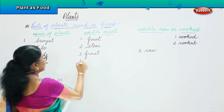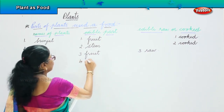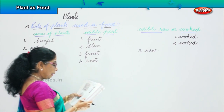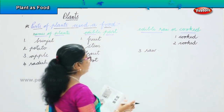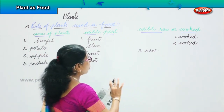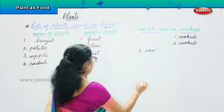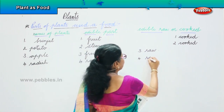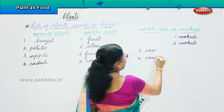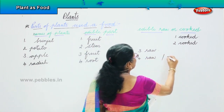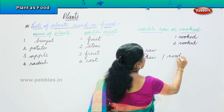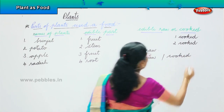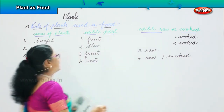Radish is a root. It can be eaten raw and cooked. You can eat radish raw, you can eat it cooked also. Radish is used for salads.